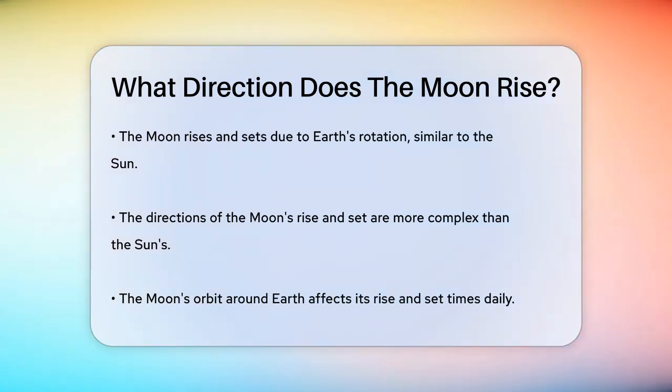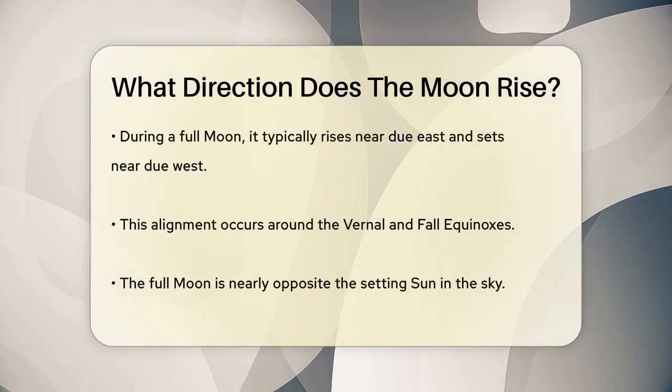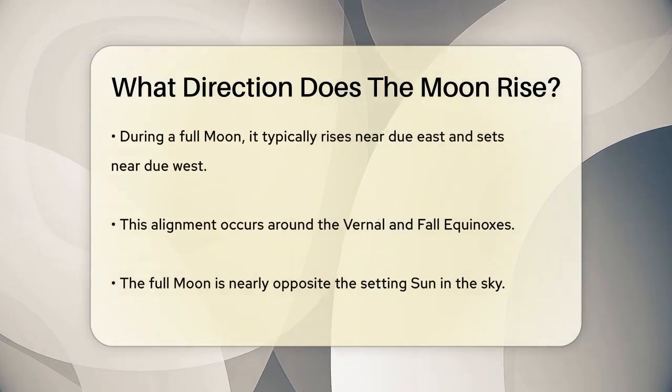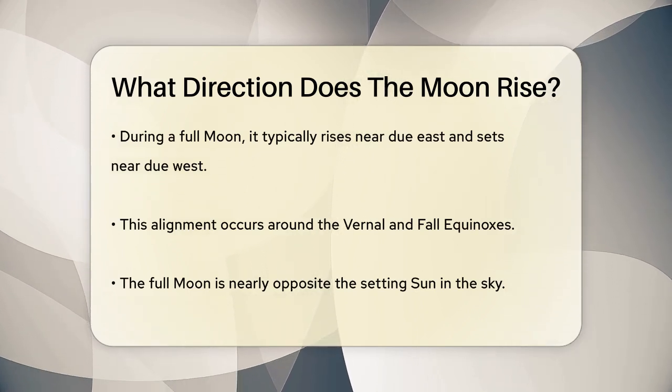The Moon's orbit around the Earth is what makes its rise and set times change each day. When the Moon is full, it often rises close to due east and sets close to due west, especially around the times of the vernal and fall equinoxes.